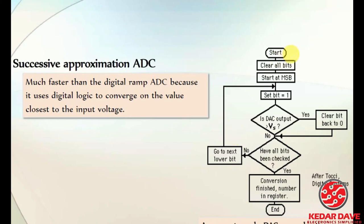The successive approximation algorithm works as follows: start, clear all bits, start at the MSB (most significant bit), set that bit to 1. If the output is greater than the reference voltage Vs, then continue forward. Check whether all bits have been tested — if not, go back and restart the process; otherwise, continue. The algorithm then converts the number into the actual value displayed on the register. This algorithm can be implemented on computers and processors.